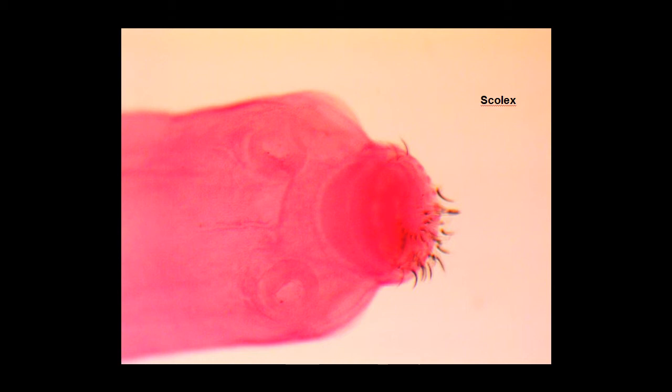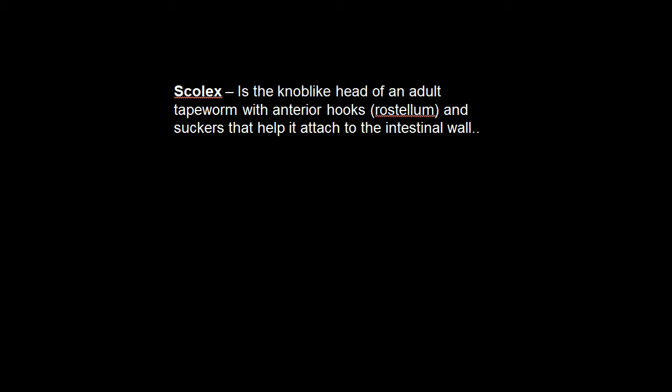Here is a picture of the scolex of the tapeworm. This is the part of the tapeworm that embeds itself into the intestine of the host animal. The scolex has structures that help it attach to the intestinal wall: the rostellum, which looks like hooks, and suckers.